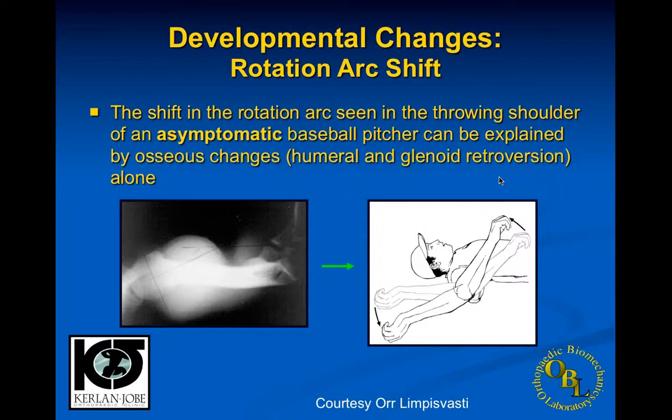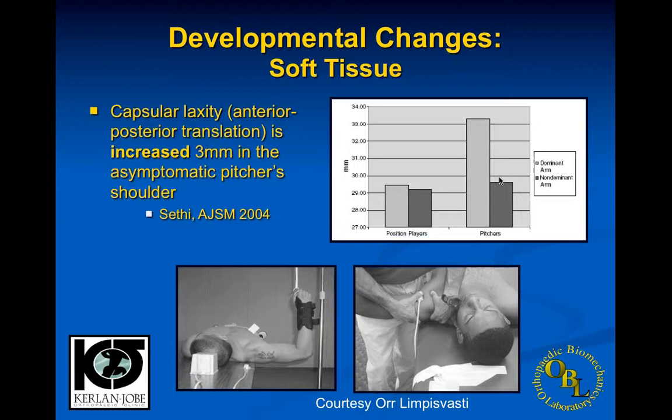Many pitchers have significant pain after their pitching - it hurts to go into internal rotation. This is the GERD syndrome, now believed primarily due to muscle soreness from pitching. It tends to be maximum right after pitching and gets much better after about three days, which is the reason the normal rotation is about every four days.